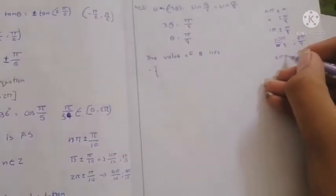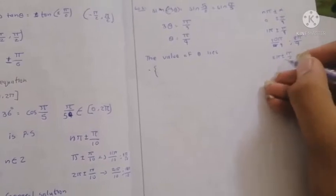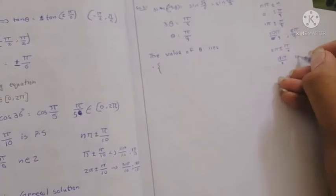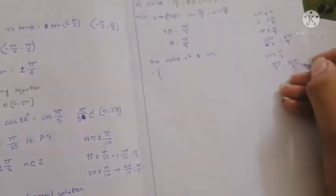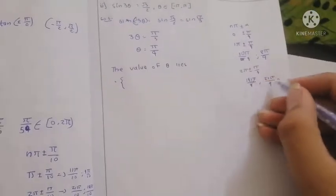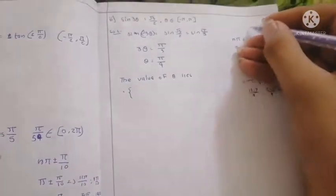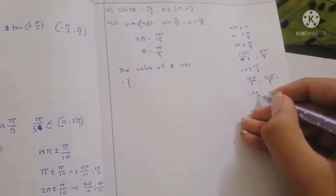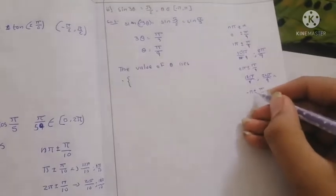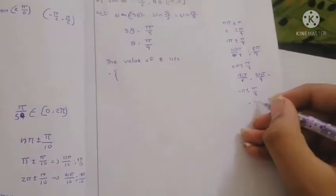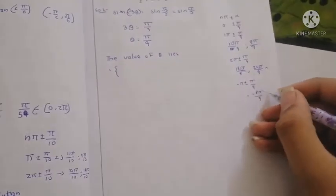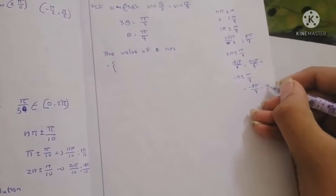Substituting n=2 gives 19π/9 and 21π/9; 21π/9 does not lie within the required interval. Substituting n=-1 gives -8π/9 and -10π/9.